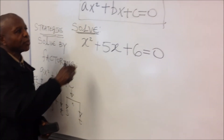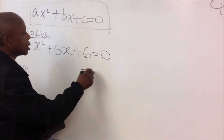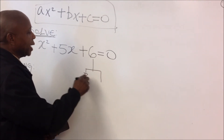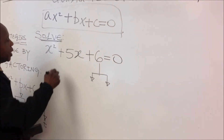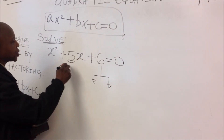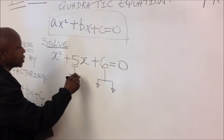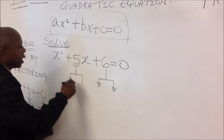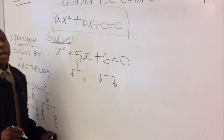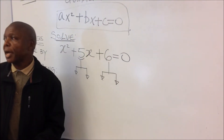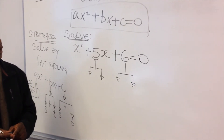So in this problem, we're going to find two numbers we can multiply to get 6. And we need to be able to add the same two numbers s and t to get 5. Can you tell me the two numbers that will do the job? Two and three.